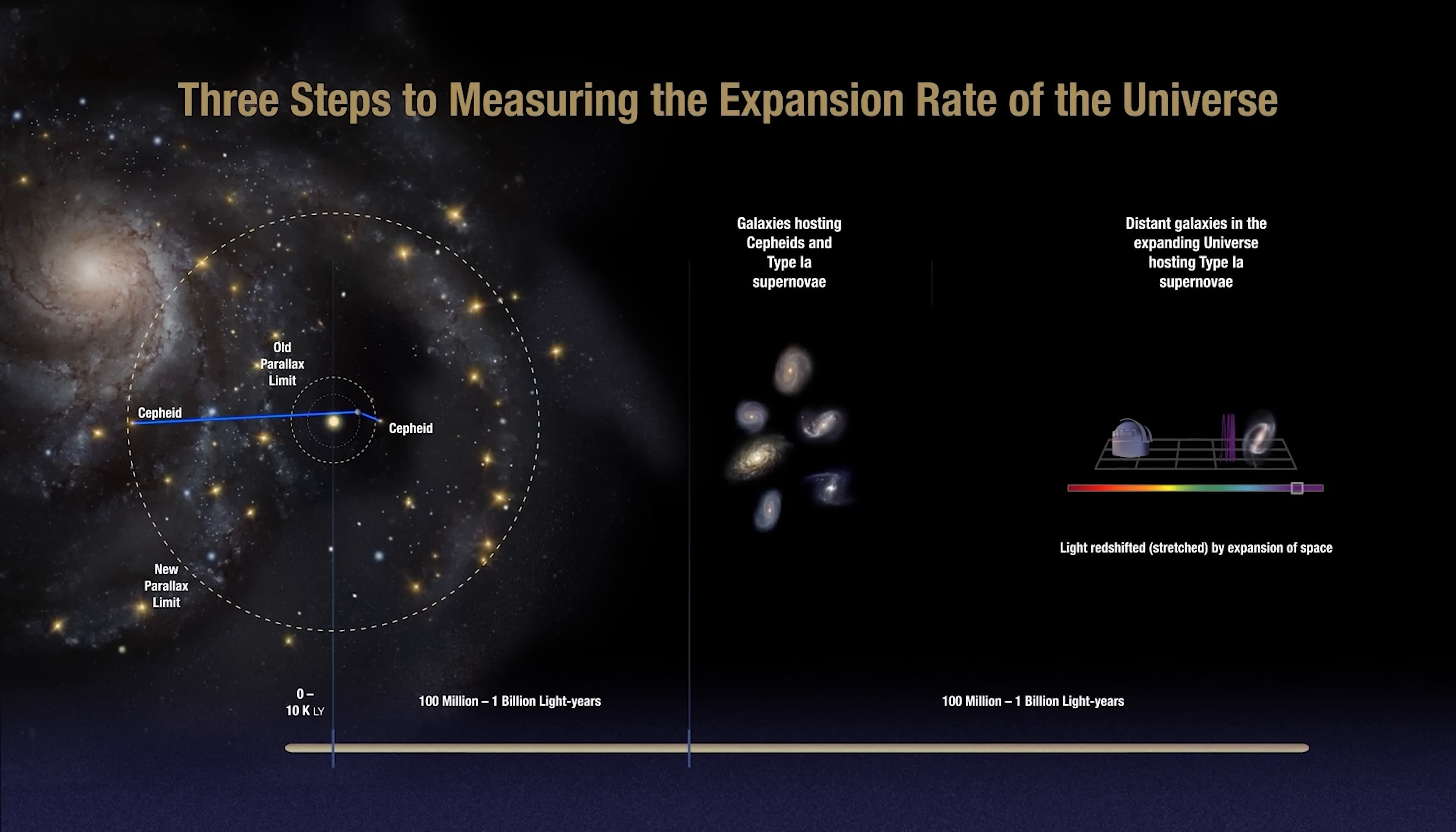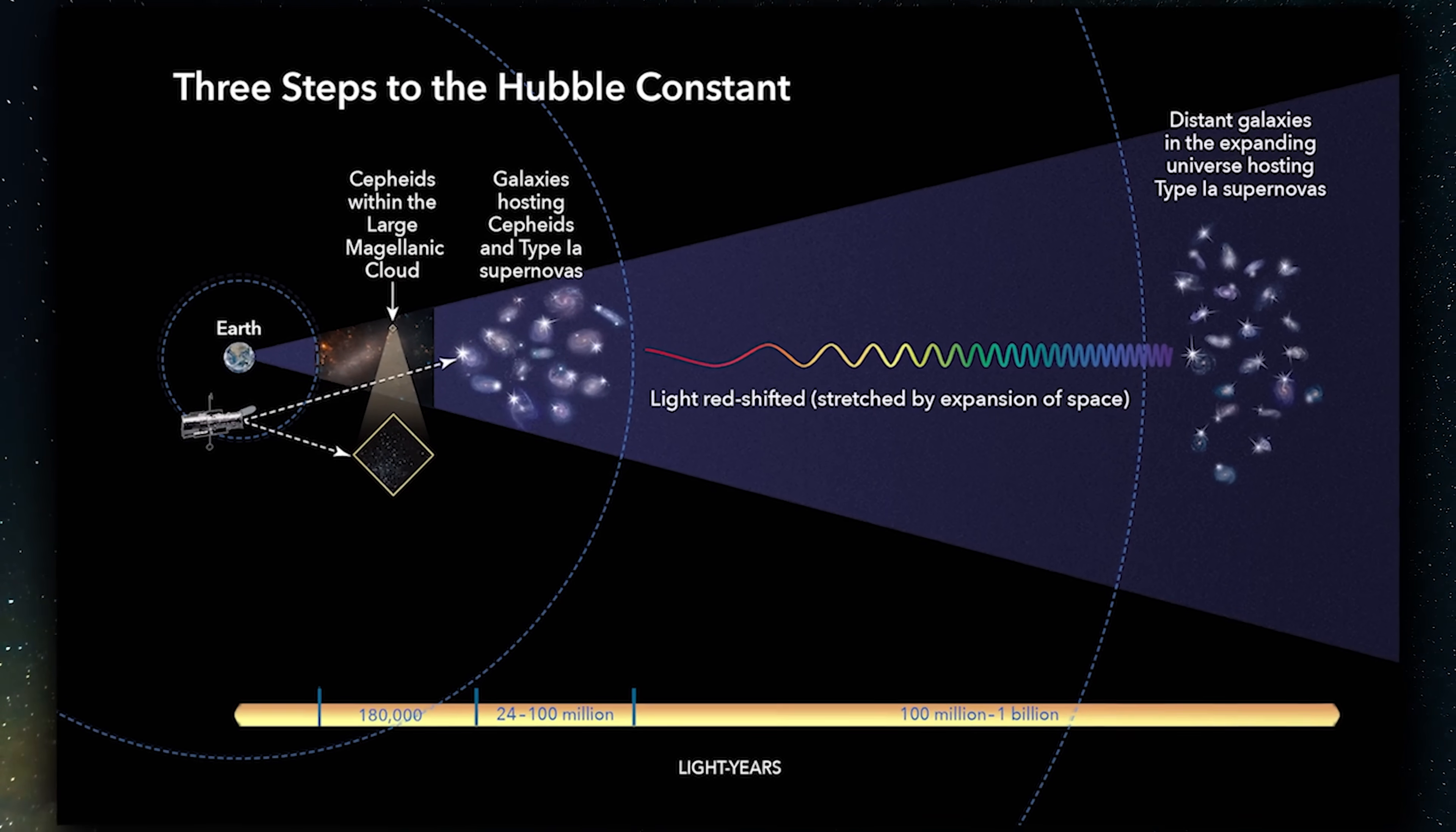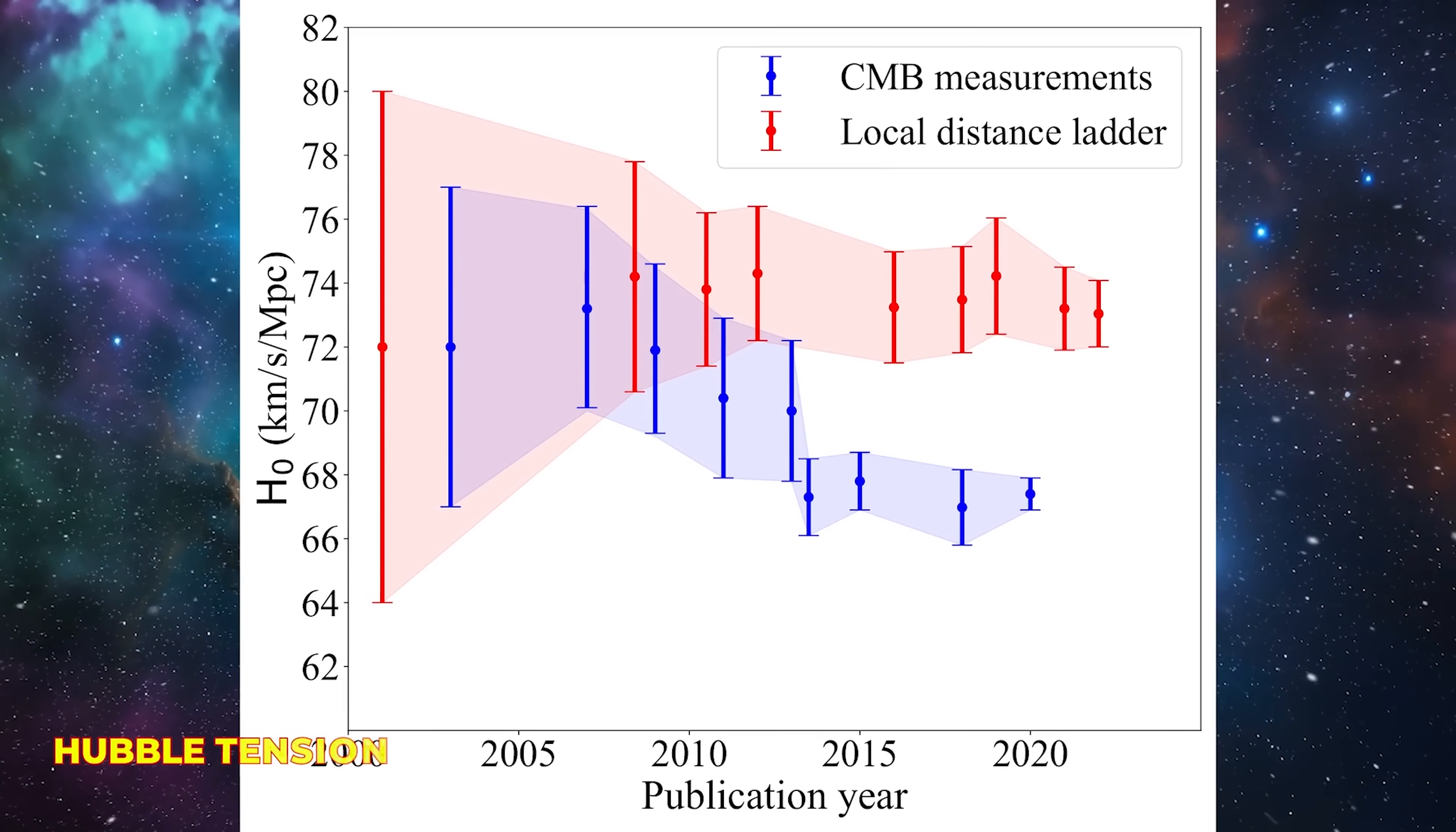Nobel laureate and lead author Adam Rees remarked that Webb's findings reveal something peculiar. The universe's expansion rate, influenced by dark energy, appears to vary based on the measurement method used. For instance, when scientists analyze the cosmic microwave background, they obtain one value for the rate of expansion of the universe. However, when they apply predictions from the standard cosmological model, they arrive at an entirely different value. This inconsistency is referred to as Hubble tension.